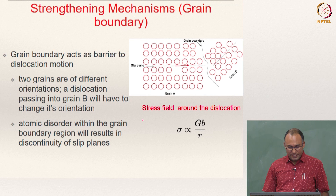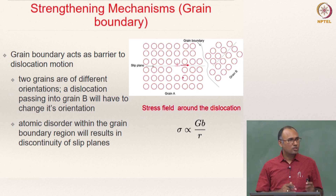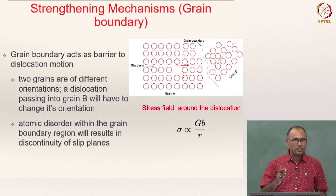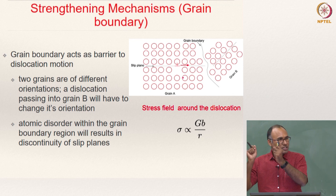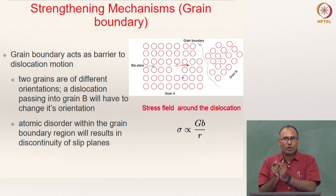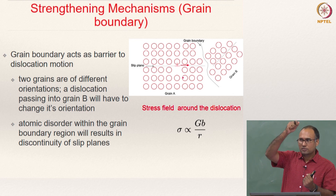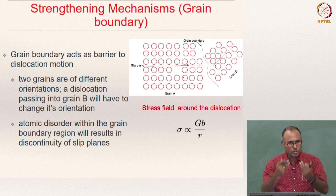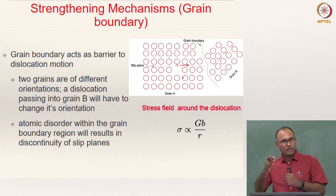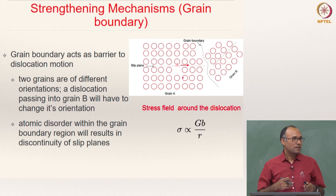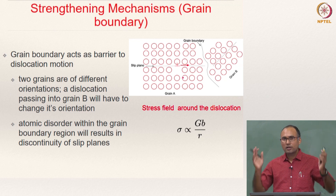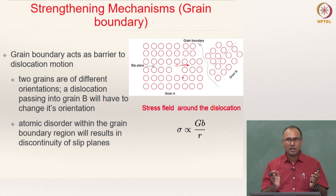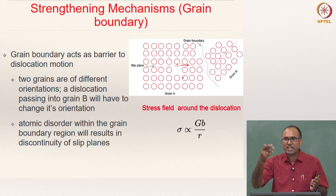As we have studied, as you reduce the grain size — this is grain boundary strengthening — the grain boundary acts as a barrier for dislocation motion and hence dislocation gets pinned near the grain boundaries. You need to apply higher stress to continue dislocation motion, and that is how grain boundary strengthening happens. If you increase the area of grain boundaries in the material, you can enhance the strength of the material.